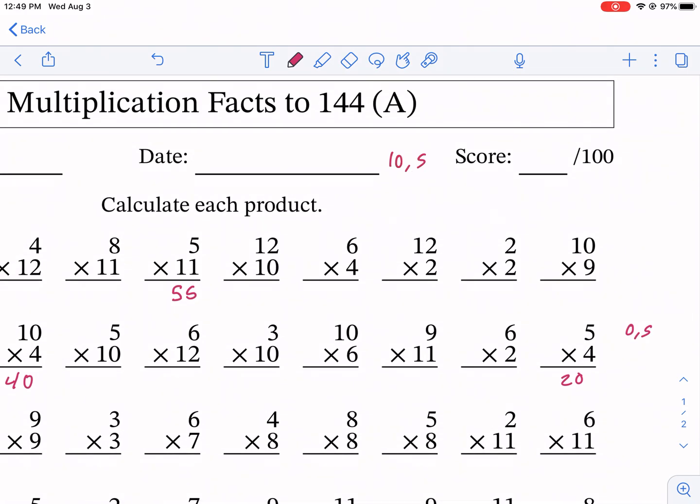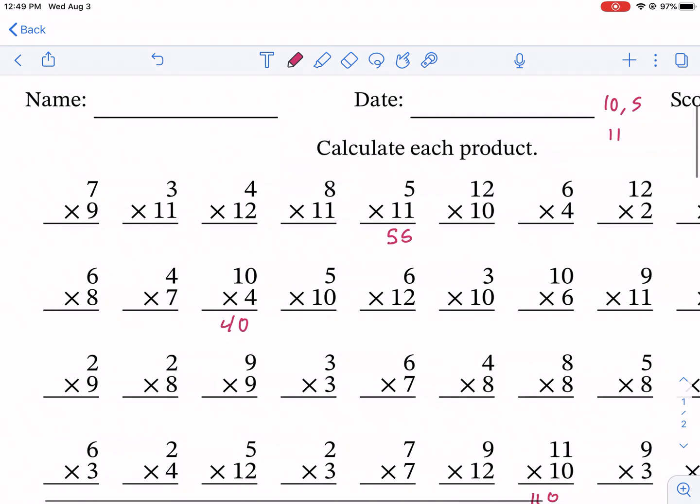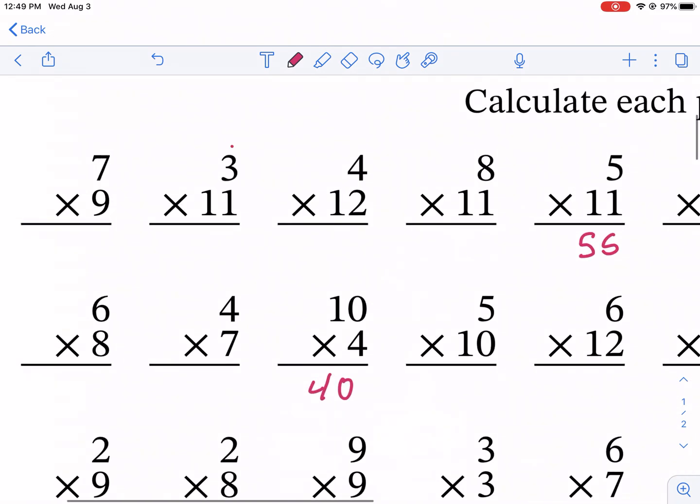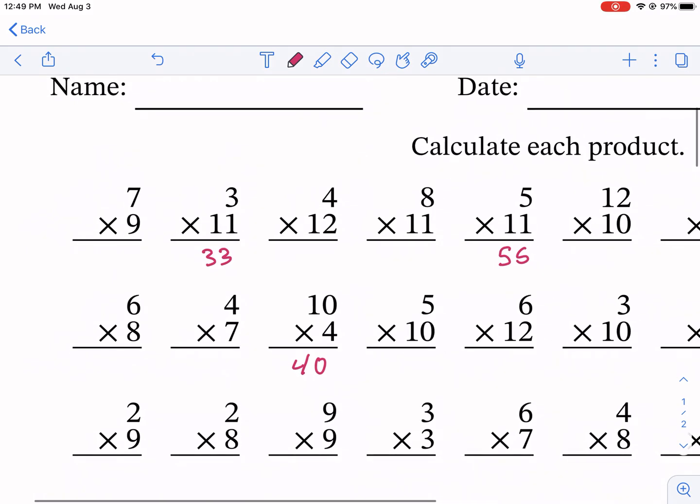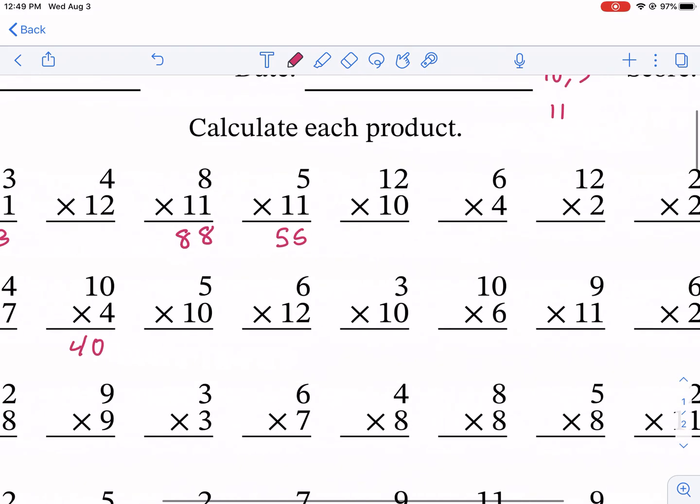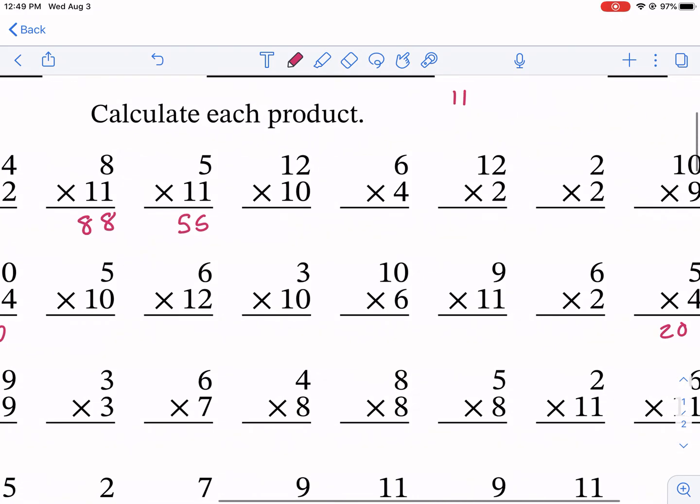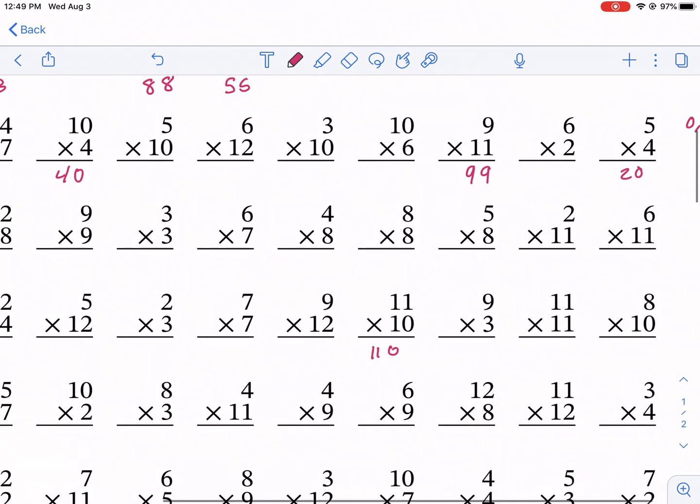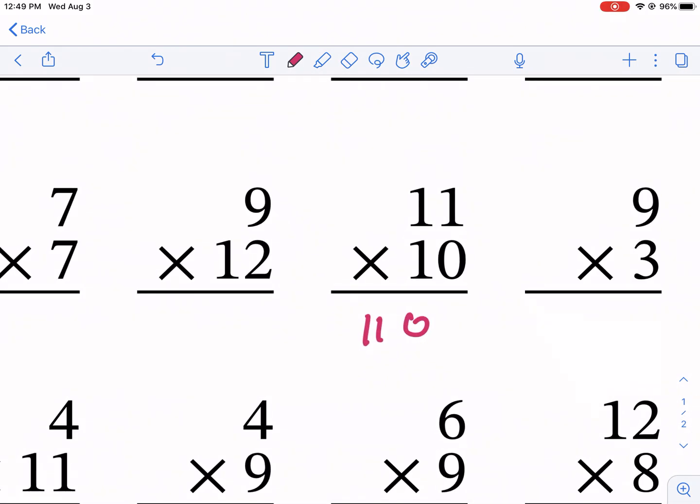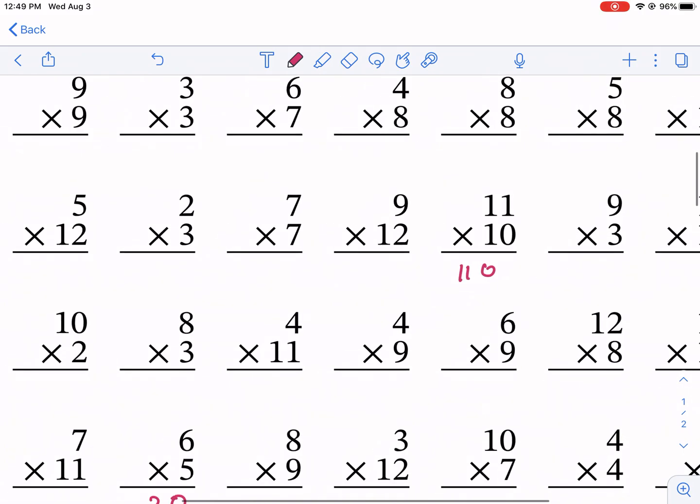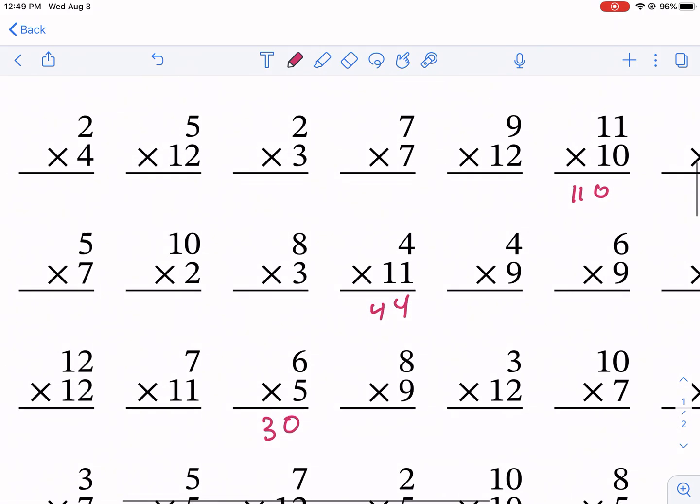Another easy one. We've talked about tens, we've talked about fives. Let's talk about the elevens. Elevens is pretty easy because they're just the same number. Three times one is three but we have it twice, so we're gonna have 33. We just write the same number two times for numbers less than 10.